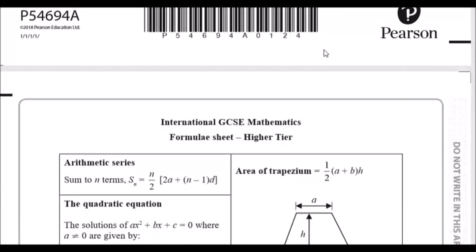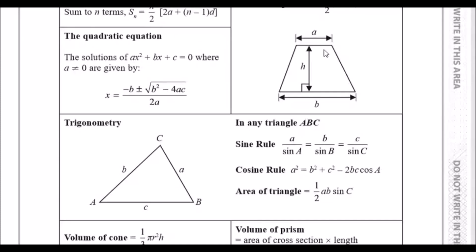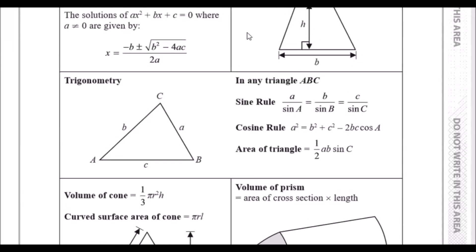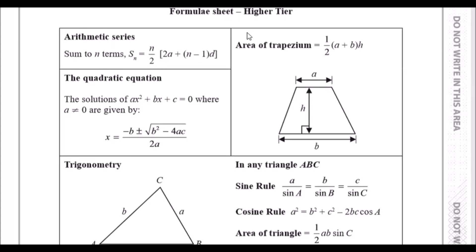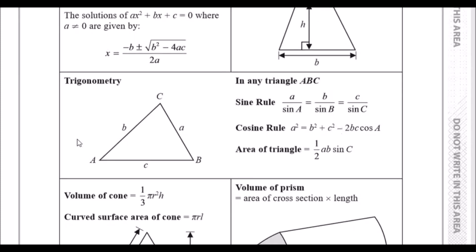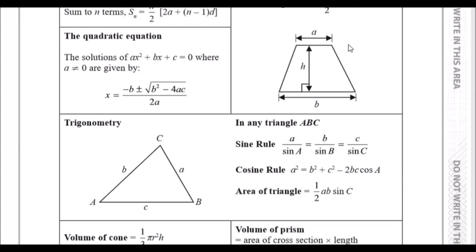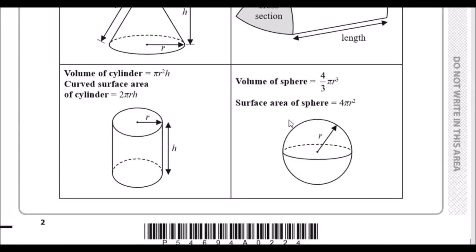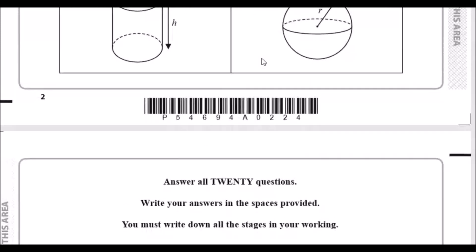I'm going to go through every question to the best I can, and I've already put solutions down for some of them to make sure they're 100% correct. As for formulas, you need to know the arithmetic series formula. The nth term formula is: U_n = a + (n−1)d — this tells you the position of the nth term. They also give you triangle properties and the quadratic formula, but not circle theorems — we'll cover those as we go.